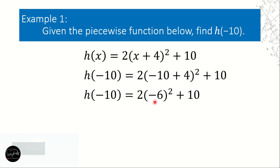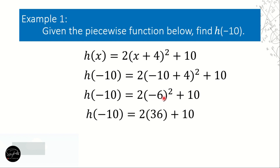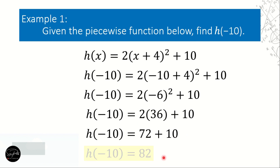Next, the exponent: negative 6 squared is negative 6 times negative 6, which equals 36. Then multiplication: 2 times 36 is 72. Finally, 72 plus 10 equals 82. Therefore, h of negative 10 based on our piecewise function is equal to 82.